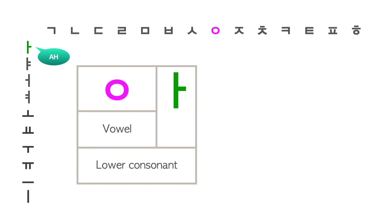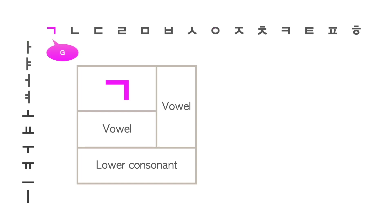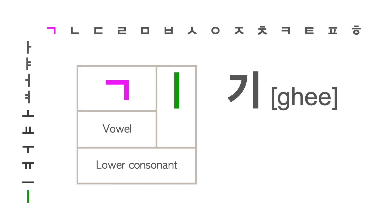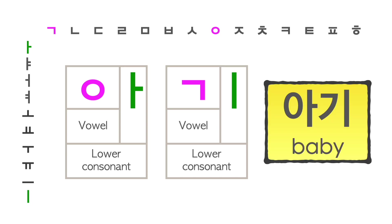Putting the vowel 아 with the consonant 이응 makes the letter 아. The consonant 기역 represents a G/K sound. When put together with the vowel 이, it forms the letter 기. Putting these two letters together looks like this — 아기 — which means baby.